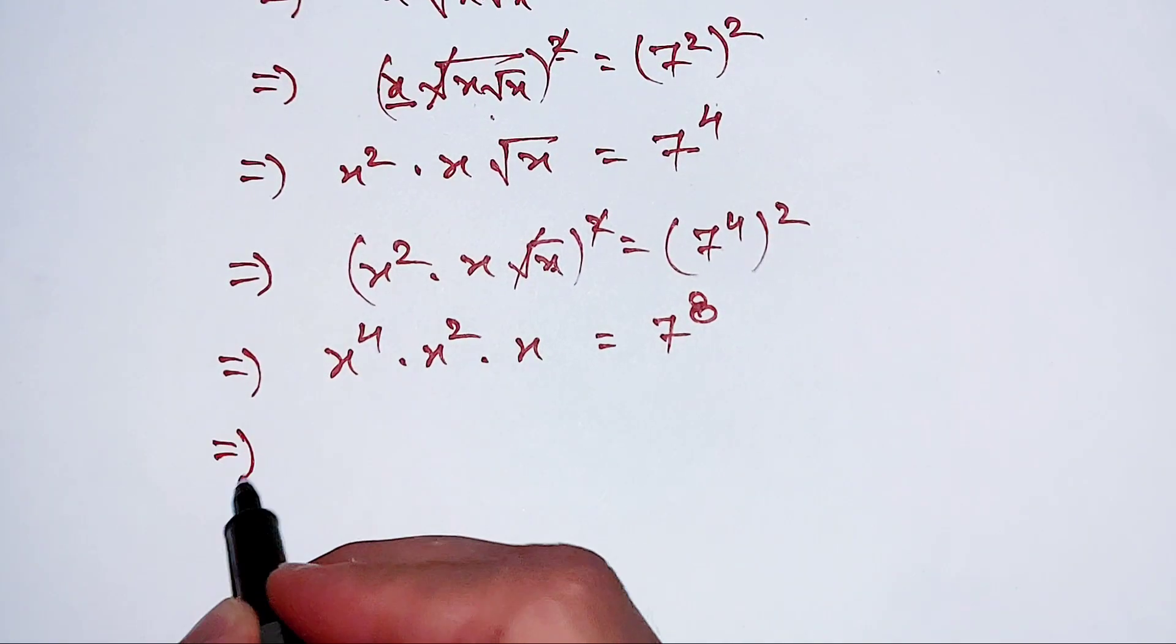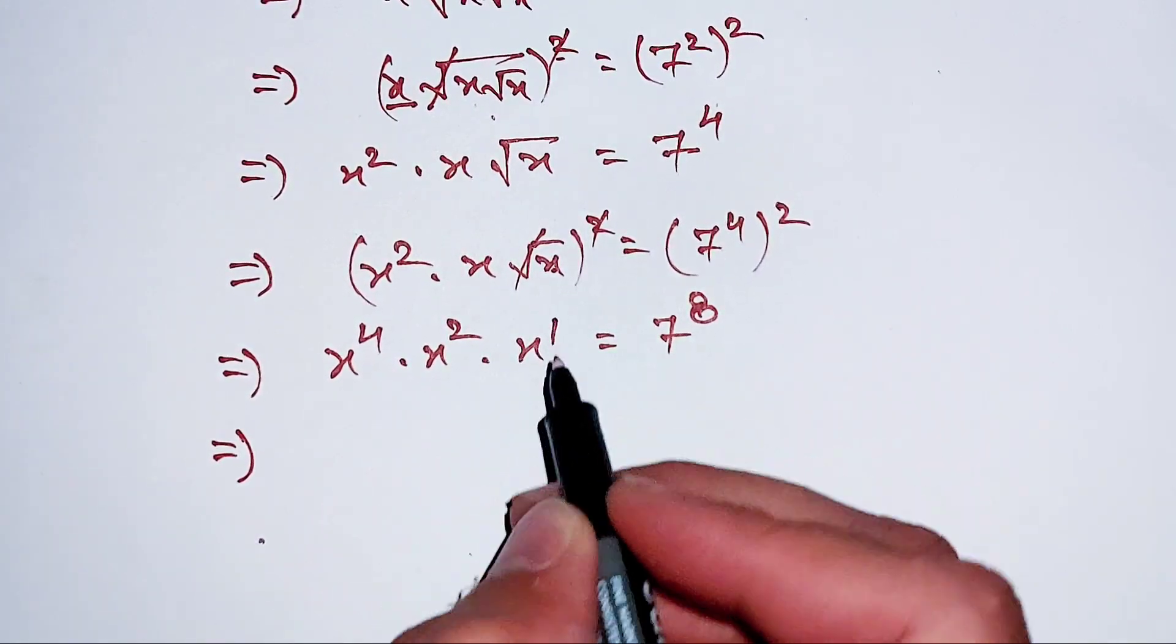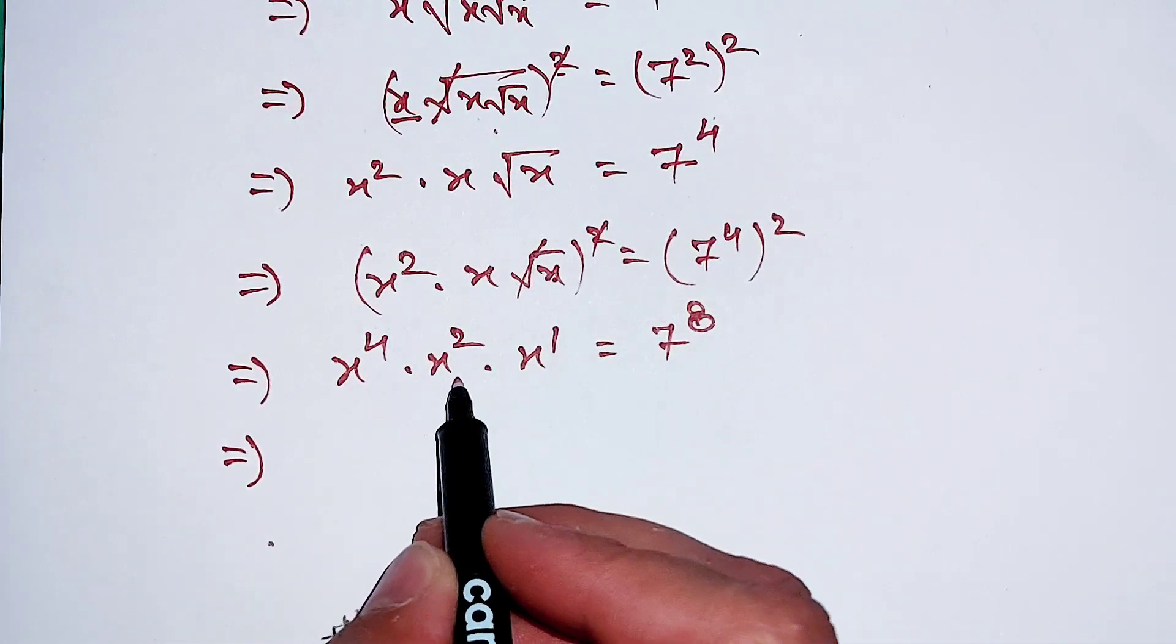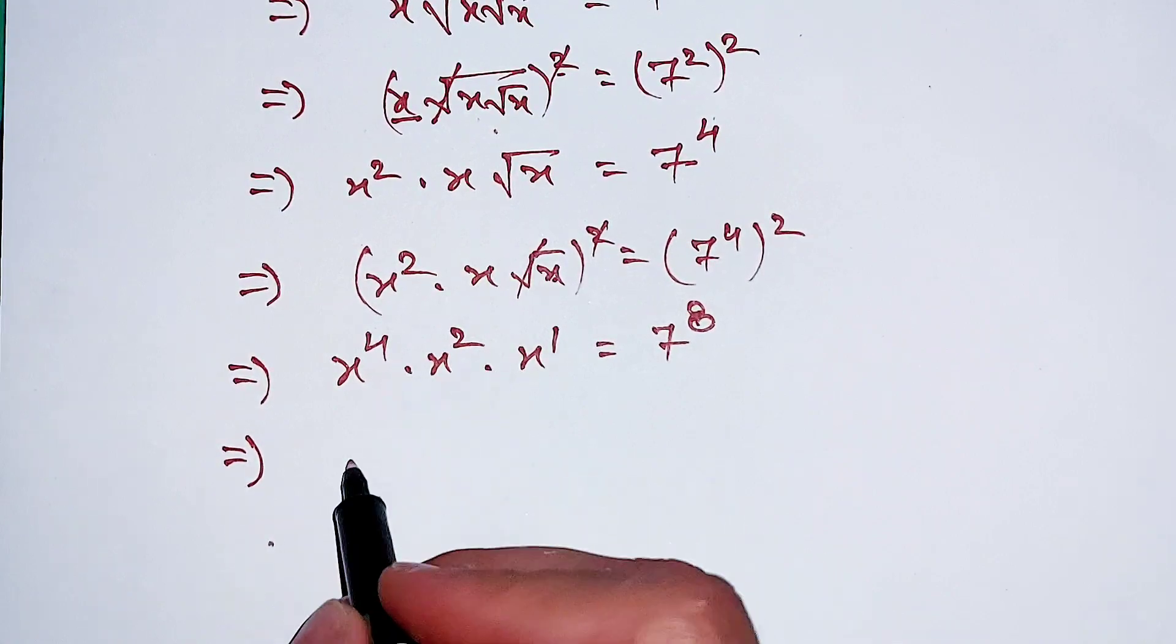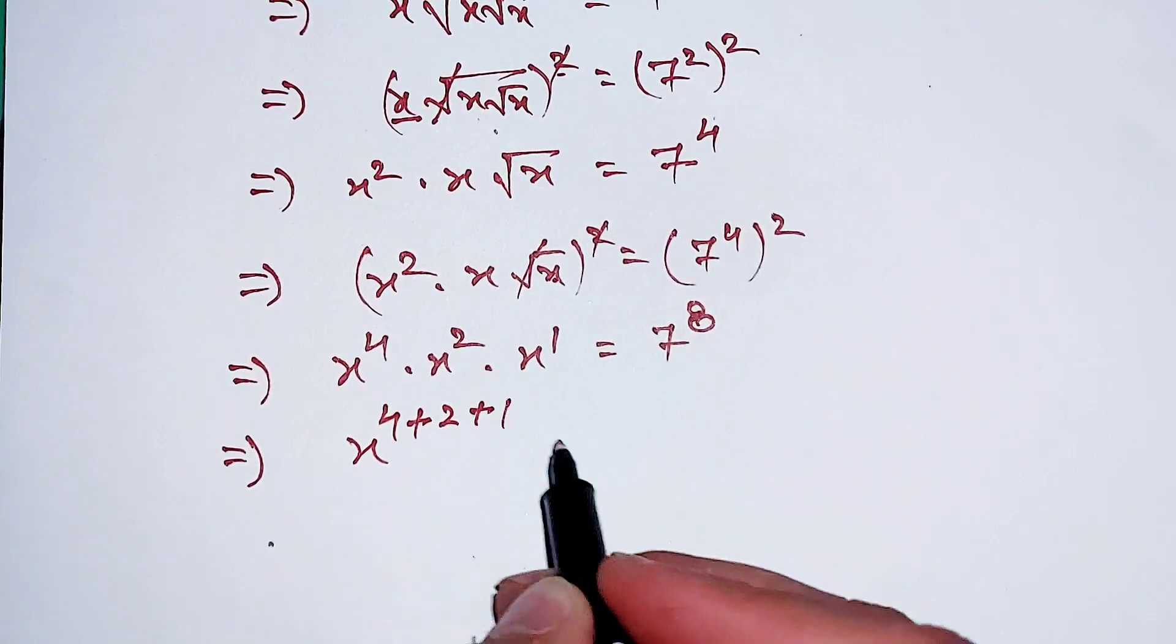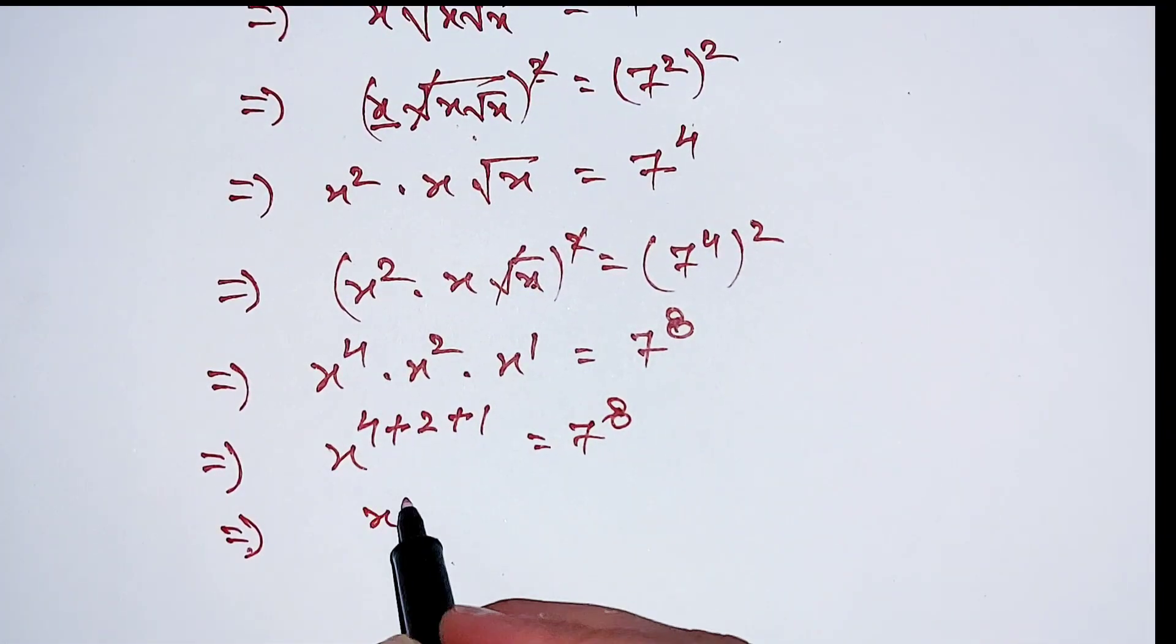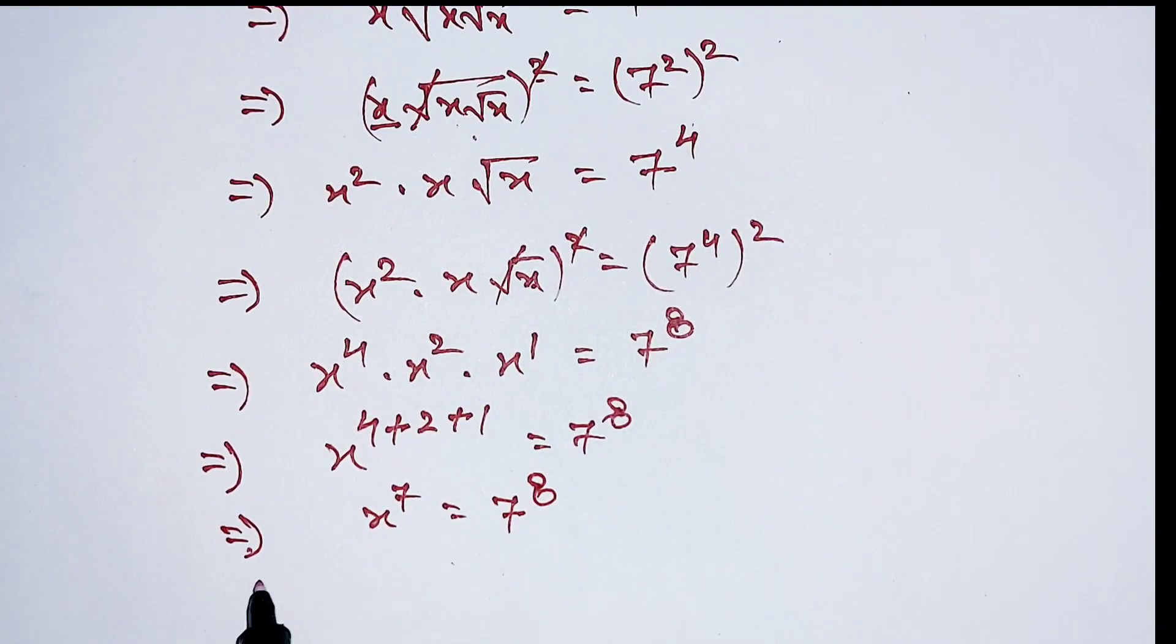Now here, x to the power 4, x to the power 2, x to the power 1. All these have the same base, so the powers will add: x to the power 4 plus 2 plus 1 equals 7 to the power 8. This is equal to x to the power 7 equals 7 to the power 8.